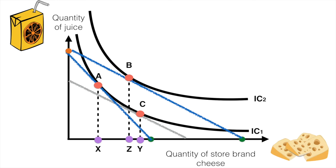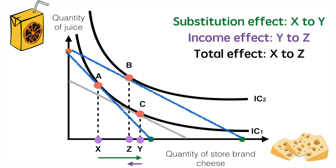The income effect, therefore, is the movement from Y to Z units of cheese. The substitution effect is positive in this situation, increasing consumption from X to Y units.